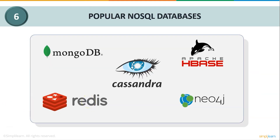Let us look at some popular NoSQL databases. Some popular NoSQL databases are MongoDB, Apache HBase, Cassandra, Redis, Neo4j, and others.